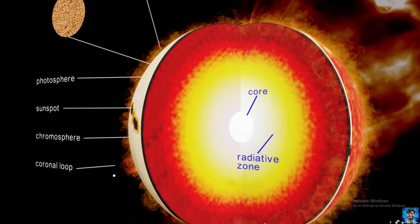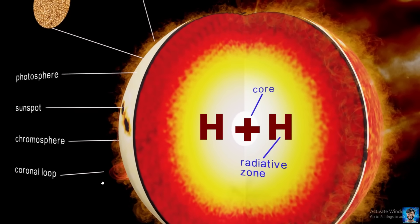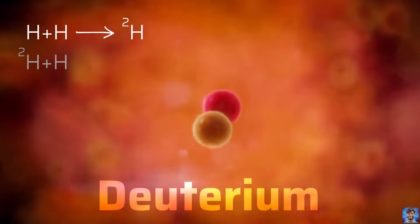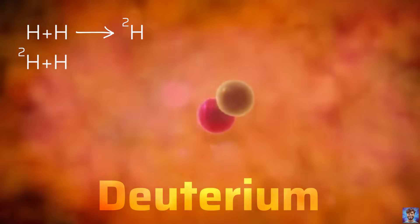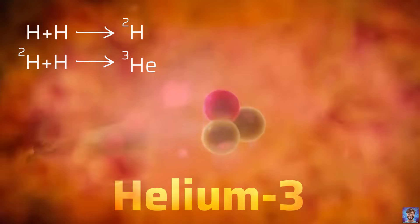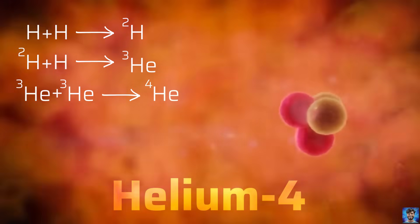Under extreme temperature and pressure, hydrogen-hydrogen fusion produces helium. It's a little more complicated than that: first, hydrogen nuclei fuse into deuterium isotopes; those fuse into helium-3; and then helium-3 fuses into helium-4.